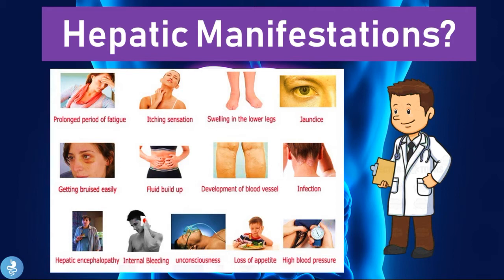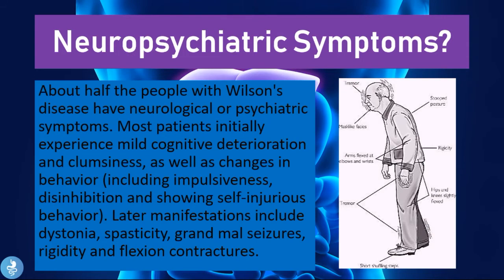Because the liver produces clotting factors, patients bruise and bleed easily. Hypoproteinemia from reduced liver protein production leads to fluid build-up. Other manifestations include hepatic encephalopathy, internal bleeding, unconsciousness, loss of appetite, and high blood pressure. Regarding neuropsychiatric symptoms, about half of people with Wilson's disease have neurological or psychiatric symptoms. Most patients initially experience mild cognitive deterioration, clumsiness, and behavioral changes including impulsiveness and disinhibition. Later manifestations can include dystonia, spasticity, grand mal seizures, rigidity, and flexion contractures.